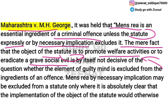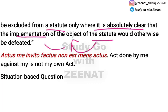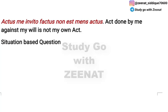In all these cases, it is not sufficient to resolve the question of whether guilty intention has been excluded from a particular offense. It will be presumed that mens rea has been excluded by necessary implication from a statute only when it is absolutely clear that the implementation of the statute's object would be defeated if the doctrine of mens rea were applied.